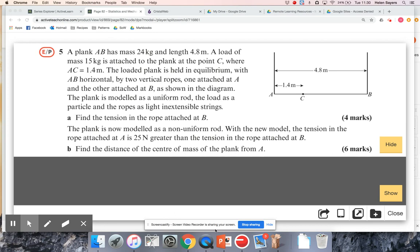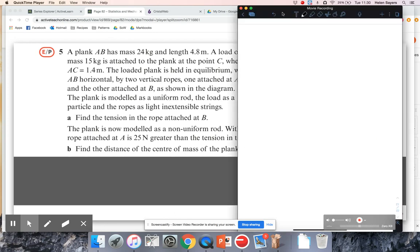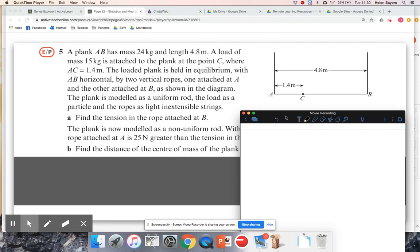So for part A, let's get our own sketch of what's going on there. So we've got this plank AB. It's held up by these two ropes, so there's going to be tension in the rope at A and tension in the rope at B.